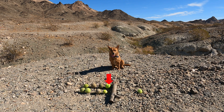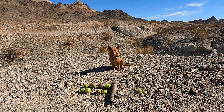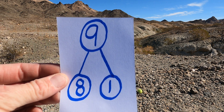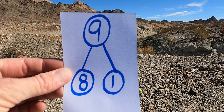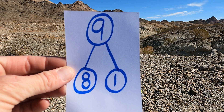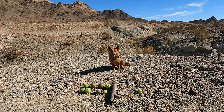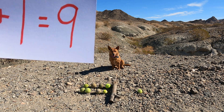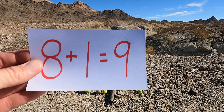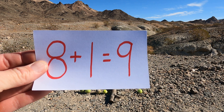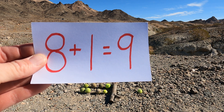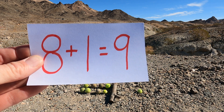Check it out — there are one, two, three, four, five, six, seven, eight — eight balls on one side and one ball on the other. Eight tennis balls and one tennis ball makes nine tennis balls. Eight plus one equals nine. Hey Ginger, let's go find another way to make nine.